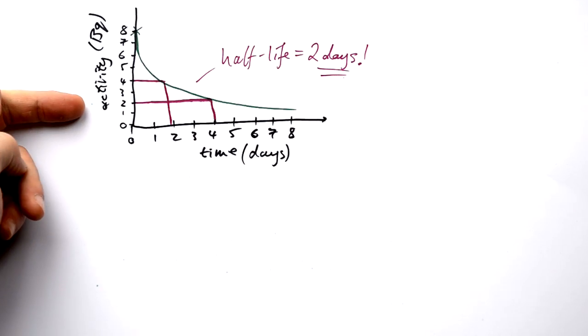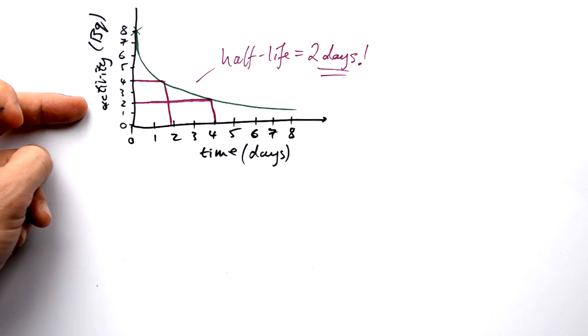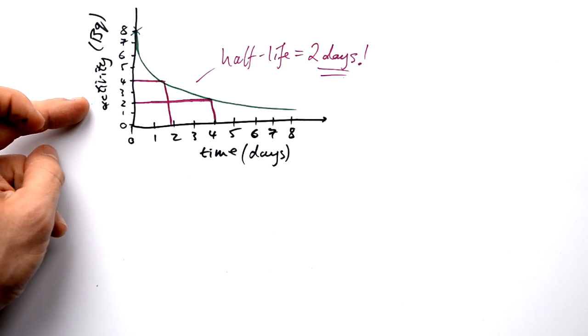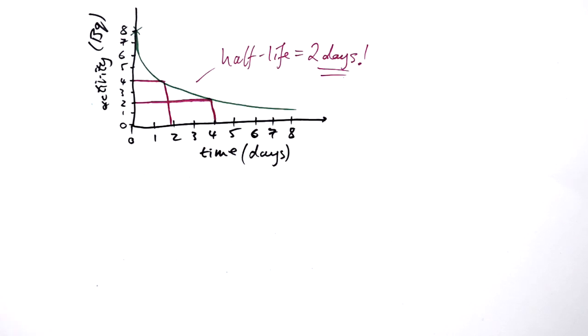By the way, this doesn't have to be activity — this could be mass remaining or nuclei remaining of undecayed material as well, and it would still work. Generally though, we go with radioactivity on the side. But what if you're not given a graph? What if you're just given some numbers?